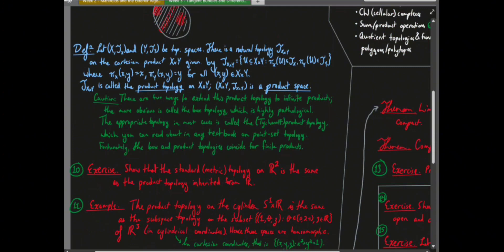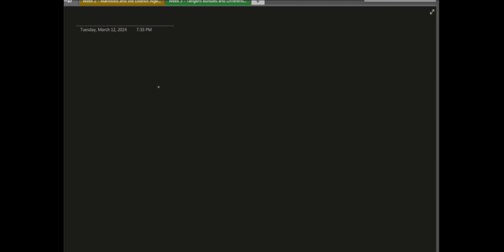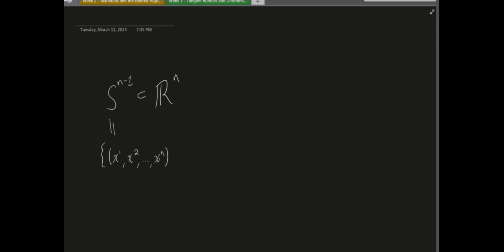In general, Sⁿ⁻¹ is the n-1 dimensional sphere, characterized as the subset of Rⁿ given by all (x1, x2, ..., xn) such that x1² + x2² + ... + xn² = 1. This gives the natural topology on that sphere via the subspace topology from Rn. This is how you construct general spheres — S3 in particular has interesting properties for contact topology.